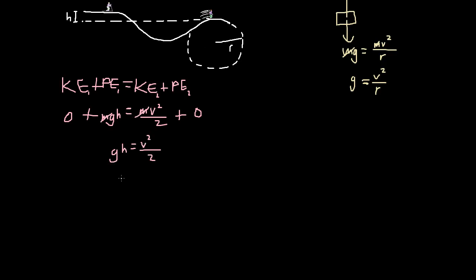Well, let's solve for g. So g is equal to v squared over 2h, right? Hey, look at that. We have equal things. So now we can just say that v squared over 2h is equal to v squared over r. Because they're both equal to g, so they must be equal to each other.